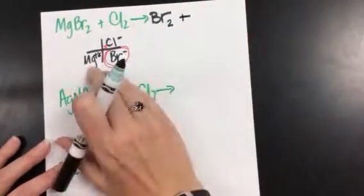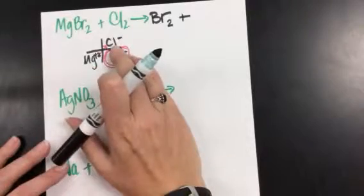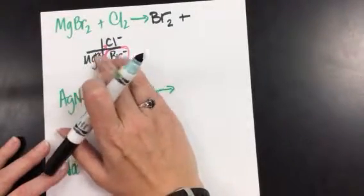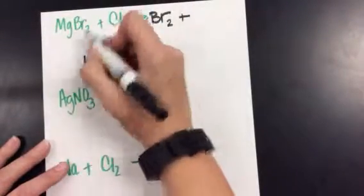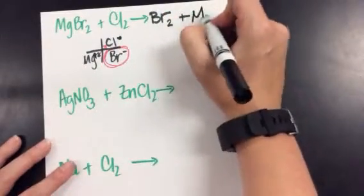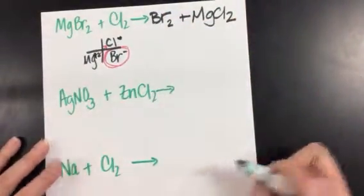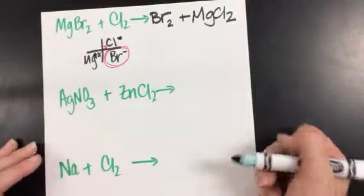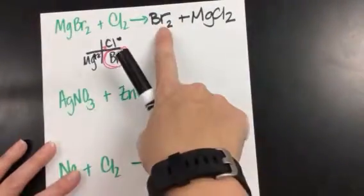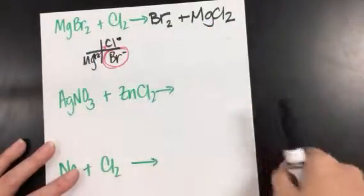Then I'm going to swap and drop with magnesium and chlorine. Mg plus two, Cl minus one — the plus and the minus disappear, so you end up with MgCl₂. The next step would be to balance this reaction: two bromine, two bromine; two chlorine, two chlorine; one magnesium, one magnesium. That one is already balanced.